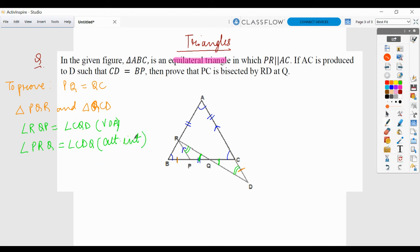We are still short of one more element and that should be a side to either use ASA or AAS congruence criteria. PQ and QC we can't use because this is something that we have to prove. RQ and QD are really isolated parts. They have no relationship that we can prove right now. Coming to RP and CD. CD is given equals to BP.